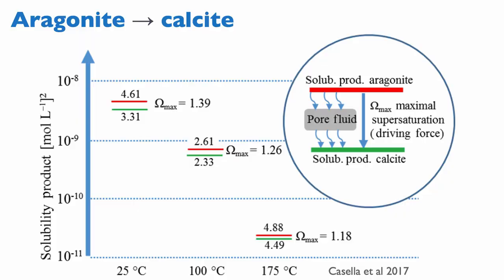This is a theme we will see throughout the diagenetic part of this class: dissolving one phase to re-precipitate another. And bringing back the concept of water-rock ratio, we only precipitate the new phase if we're not moving the fluid away from the site of precipitation. What's interesting with carbonates is it's exactly the reverse of what you expect in clastic systems — there is a higher tendency for dissolution at low temperature and a higher tendency for precipitation at high water temperature, up to 175°C.